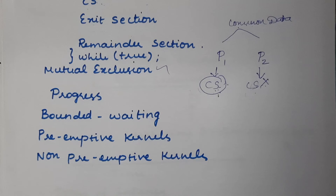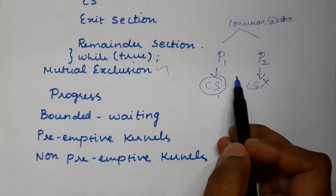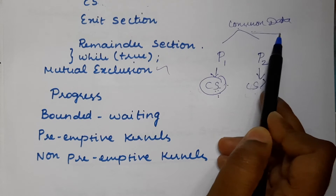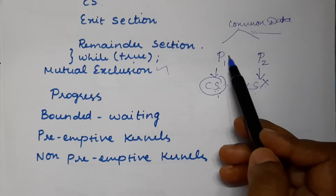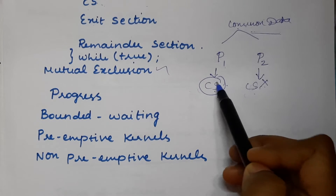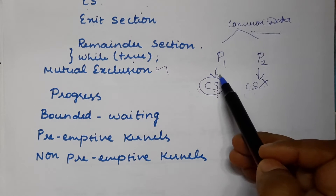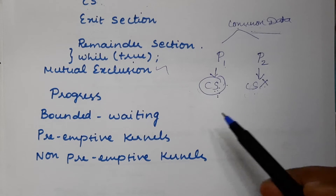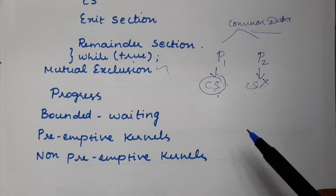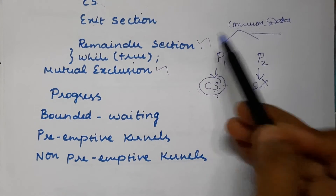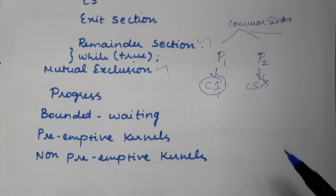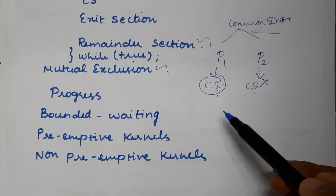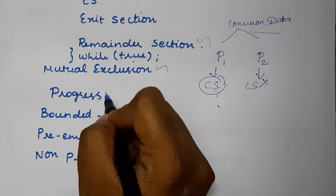The next criterion is progress. What do we mean by progress? If no process is currently in the critical section and one process, say P1, wants to enter the critical section to access the common data, we need to ensure that all other processes are in the remainder section — which is the part of the process other than the critical section. Only then can we allow that particular process to enter into the critical section. This is the progress criterion.